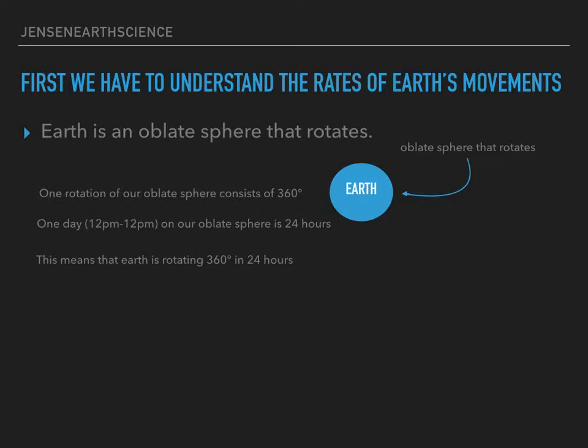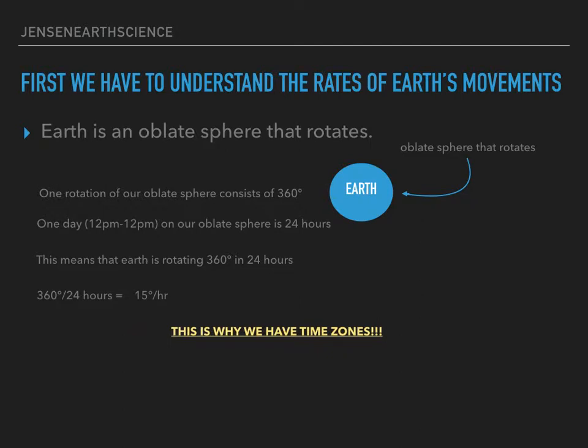So how many degrees does it rotate in one hour? I take 360 degrees and divide it by the 24 hours that it's rotating for, and I get 15 degrees per hour. This is why we have time zones.